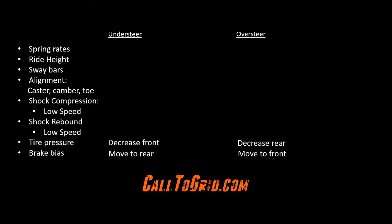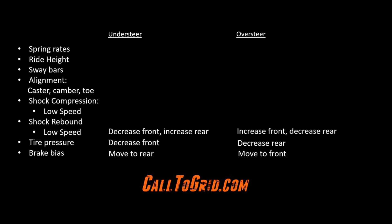If this still hasn't fixed your issue, we now look to the shocks. In addition to tire pressure, shocks are where you will spend most of your time tuning at the track if your car already has a pretty good basic setup. For understeer, consider running a less firm front low speed shock rebound or running more firm on the rear. For oversteer, run more firm up front or less firm on rear. If you have double adjustable shocks, run a less firm front low speed shock compression or increase rear to correct for understeer. To correct for oversteer, do the opposite: run more firm front or less firm rear low speed shock compression.